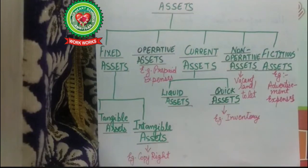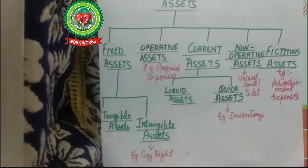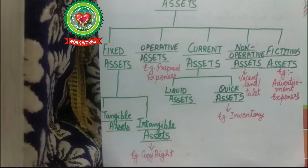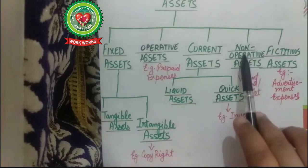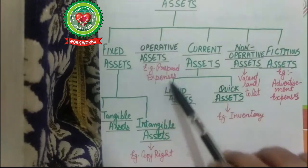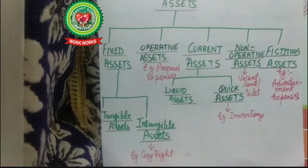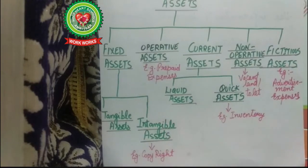We will now discuss the different types of assets. First, we have fixed assets, which are of two types: tangible and intangible. Next are operative assets, then current assets — which include liquid and quick assets — then non-operative assets, and finally fictitious assets. Operative assets are those assets of the company which help in generating income.